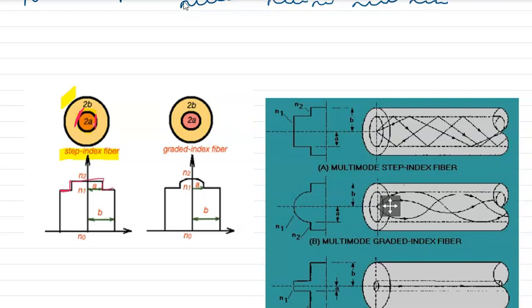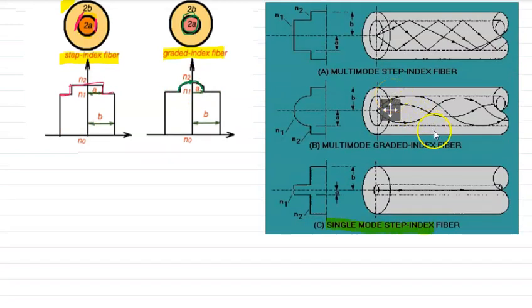In a step index optical fiber, there is a gradual change at the core-cladding interface. Step index fibers are further divided into two types: single mode step index optical fiber and multi-mode step index optical fiber.